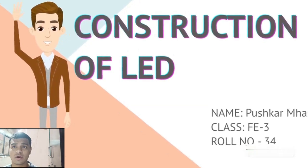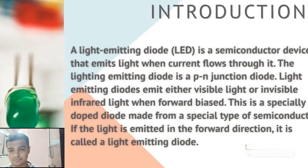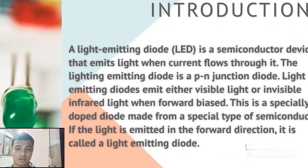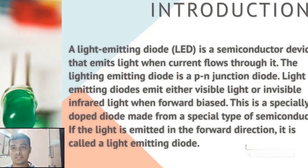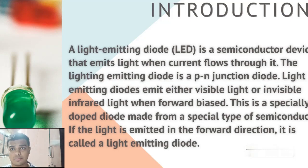A light emitting diode is a forward bias diode, also a pn junction diode. The light emitting diode emits light which is visible or invisible infrared when it is in a forward bias condition. This is a specially doped diode made from a special type of semiconductor.